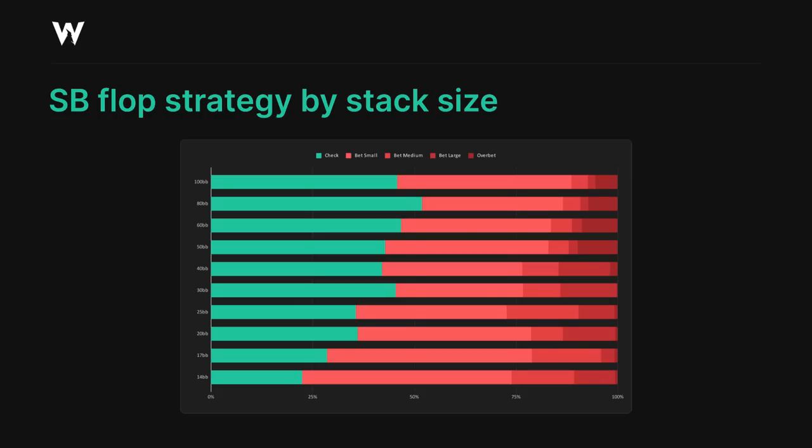It's also noteworthy here that the small blind does quite a lot of big betting, including a lot of over-betting at deeper stacks. This does disappear once we're below 30 big blinds, but the medium and large bets are still prevalent at this stack size, and indeed at many stacks below 30 big blinds as well. This is reflective of our much stronger range in raised pots, and the fact that we do possess a nut advantage on many boards.